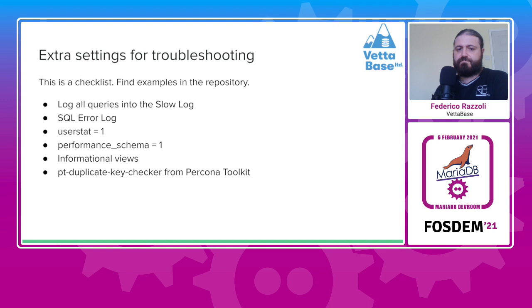You should use MariaDB SQL error log, which logs the query that generated an error. You should enable user statistics and performance schema, and then those system tables are also used by some informational views that you can find in the GitHub examples, which add useful information for the developers. For example, one of the views in the GitHub repository contains all the queries that never returned any rows and therefore are probably useless. You should probably also add some tools from Percona Toolkit — if nothing else, at least pt-duplicate-key-checker, which should be used after adding indexes to check if those indexes are duplicates.